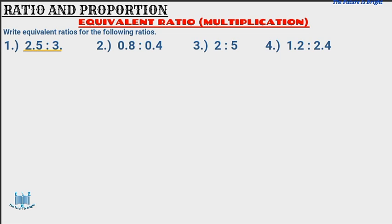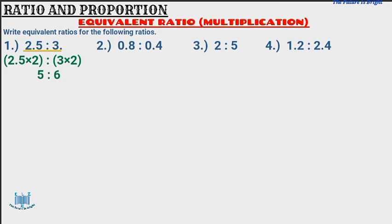In this case, I'm going to choose 2. I'm going to multiply 2.5 by 2 and 3 by 2. So 2.5 multiplied by 2 gives us 5, and 3 multiplied by 2 gives us 6. The ratio 2.5 to 3 is equivalent to 5 to 6. I have now found the equivalent ratio of 2.5 to 3.